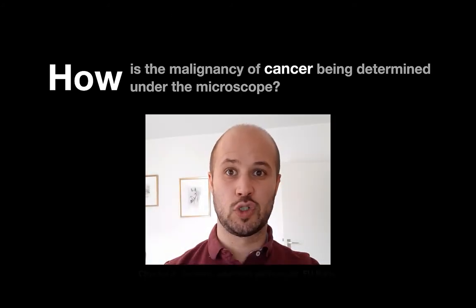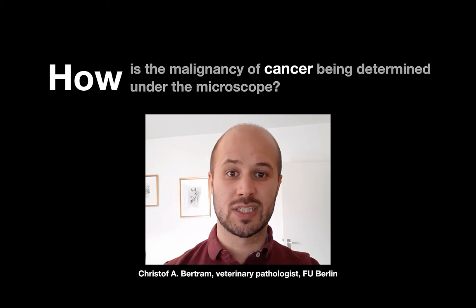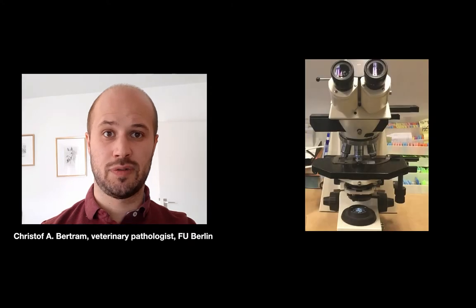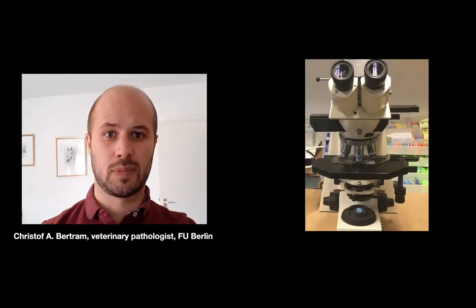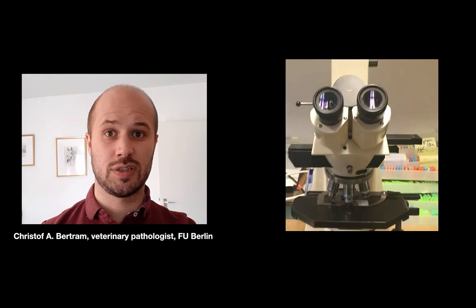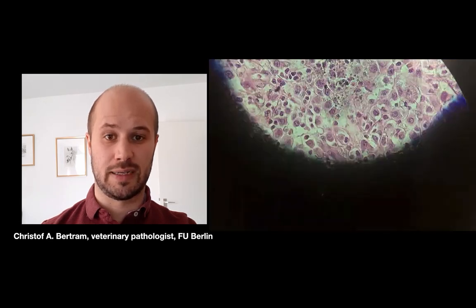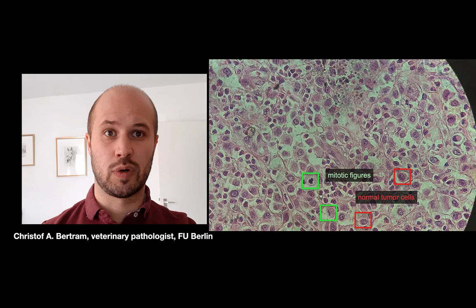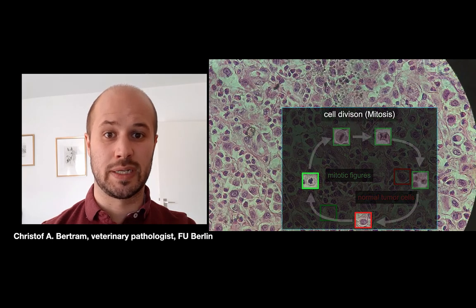For assessment of how malignant a tumor is — that is, how likely it spreads to surrounding tissue or distant organs — pathologists take a thin slice of tissue and assess it under the microscope. Depending on the tumor type, we consider different microscopic criteria to determine malignancy. One very relevant question is how often tumor cells are dividing. Cells undergoing division are in the mitosis phase of the cell cycle, and the rate of the cell cycle is known to be one of the most predictive factors for tumor malignancy.